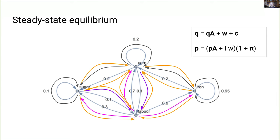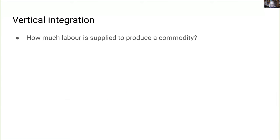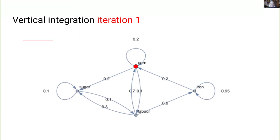These equations describe both the steady-state quantities produced and the prices of production. There are no opportunities for capitalists to reallocate their capital to different sectors to generate more profits, so a uniform or equal profit rate prevails across all sectors — represented by pi in the price equation. The flows of goods happen continuously in this steady state. How much labor is supplied to produce one unit of corn? What's the value of one unit of corn? To answer this we need to vertically integrate in this economy.